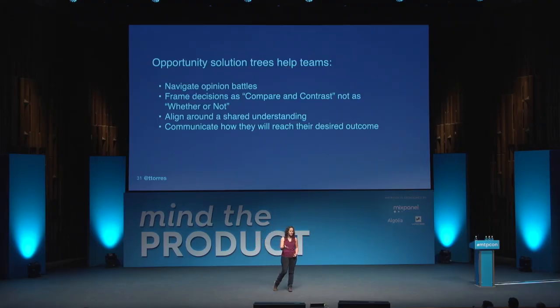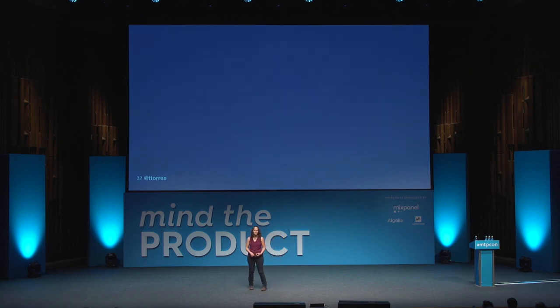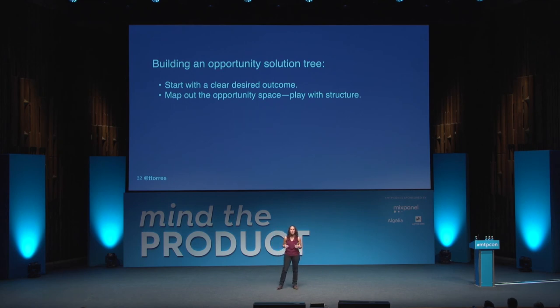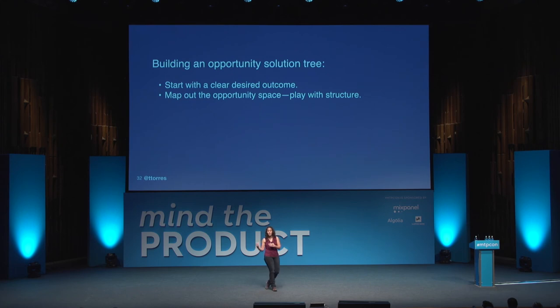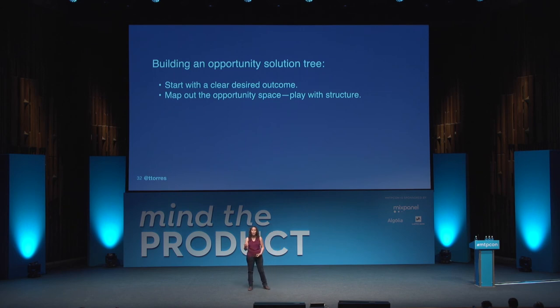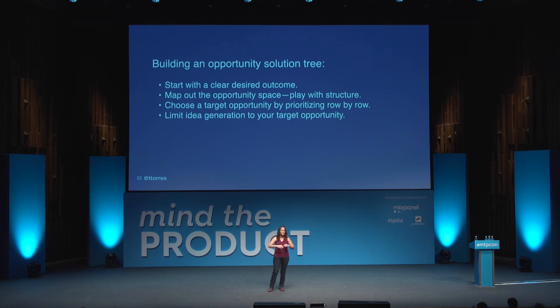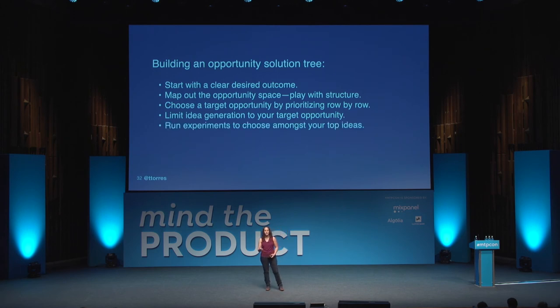So let's talk about how to build your first tree. It starts with a clear desired outcome — you can't get to where you're going without knowing what that outcome is. Next, map out the opportunity space — this is the hardest part. The structure of your opportunities has the biggest impact on how you frame the problem, and how you frame the problem influences what types of solutions you can build. Play with that structure, try more than one way, it will open up more possibilities. Third, choose a target opportunity by prioritizing row by row. Then limit your idea generation to that one opportunity — don't generate lots of first ideas, get to that seventh, eighth, ninth idea. And finally, use your experiments to choose between your ideas.